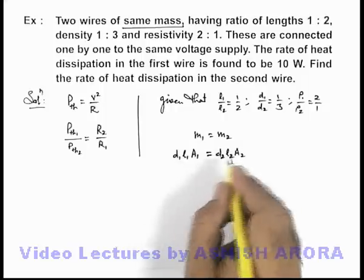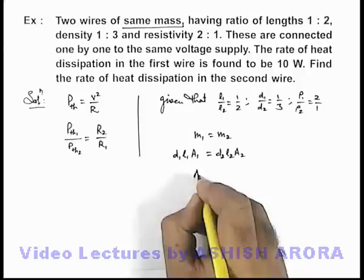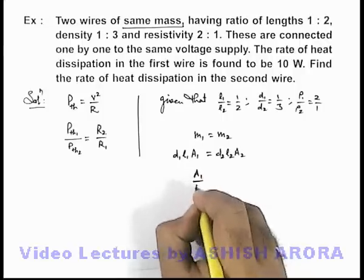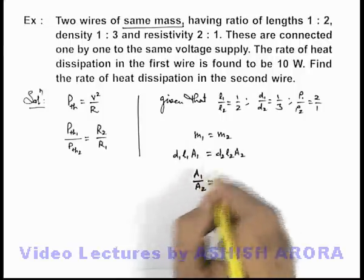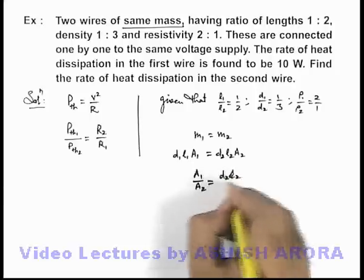From this relation we can easily find out the ratio of areas. A1 by A2 we can write as d2·L2 upon d1·L1.